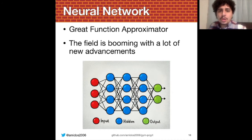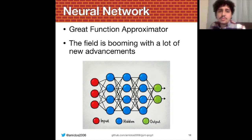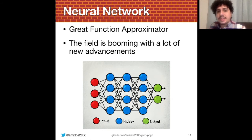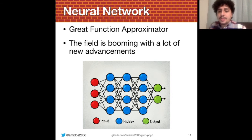In this work we're also using a neural network as our level generator. The reason is that neural networks are great function approximators and the field is booming with advancements. You can see deep reinforcement learning being used to beat the world champion in Go, achieve very good scores in Atari games, and play Dota alongside human players.